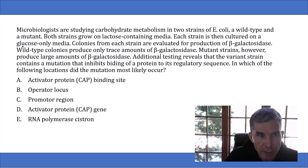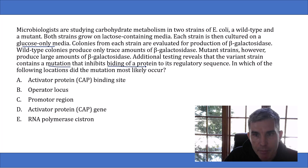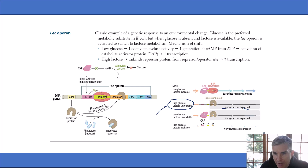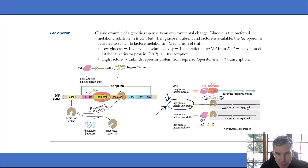Going back to the question — they're growing E. coli on glucose-only media, so the lac operon should not be working, but it is in the mutant colonies. The reason it's working in the mutant colonies is because they have a mutation that inhibits binding of a protein to its regulatory sequence. In this experiment we have high glucose with lactose unavailable, so the lac genes should not be expressed, but they are being expressed in the mutant strain. The problem must be with the repressor protein — it's unable to bind.